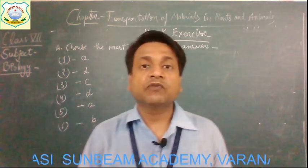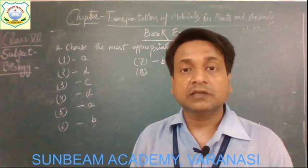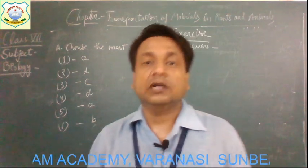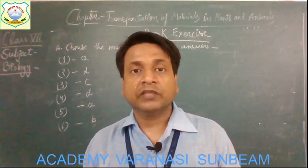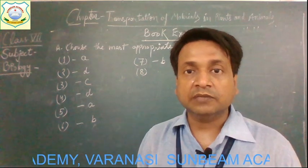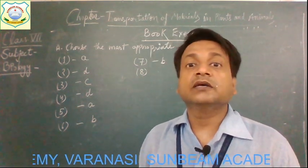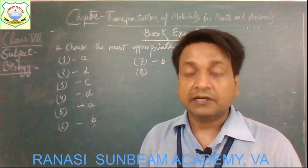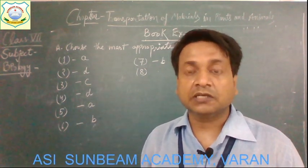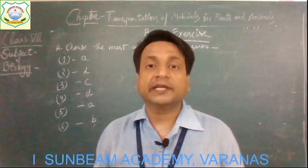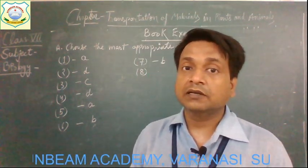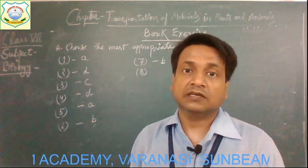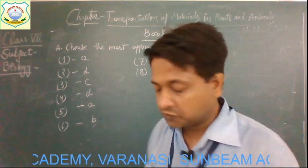Question number eight: The loss of water through the stomata of leaves is called — options are wilting, translocation, transpiration, and transportation. This loss of water through the stomata of the leaves is known as transpiration. The correct option is C.